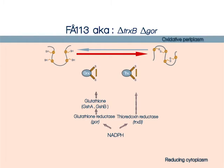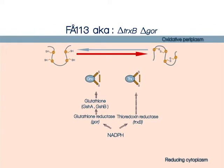Genetic knockouts of both GOR and TrxB are lethal to the cells, as cells require a certain level of reducing capacity for viability.